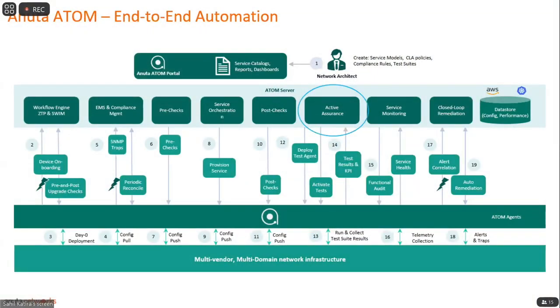Before we take a deep dive into Atom Active Service Assurance — I'll invariably use the term ASA, which means the same thing — I'll take a quick recap of the automation journey Kiran covered previously. Kiran stated that Atom can help with device onboarding for Greenfield or Brownfield networks. Once the device is onboarded, we can do service orchestration with L2 and L3 VPNs. Right after service orchestration comes ASA, which lets you track service SLAs using a wide variety of tests and metrics. This session focuses on ASA, which works from day one of service deployment and continuously tracks the service for any threshold breach throughout the entire service lifecycle.